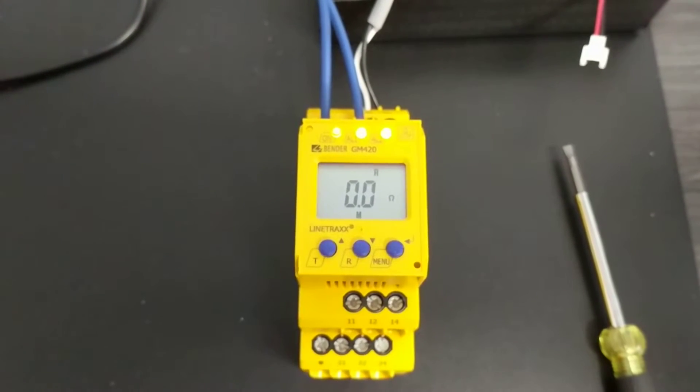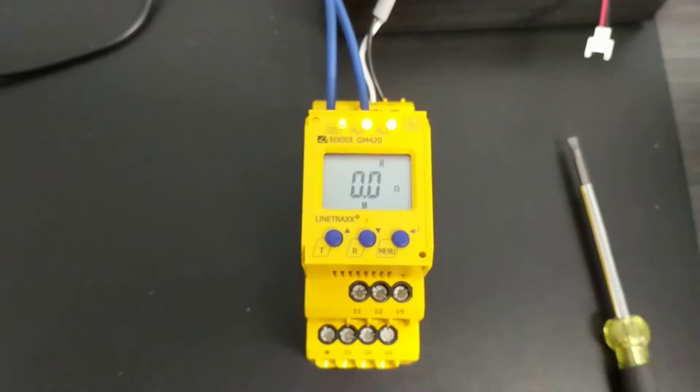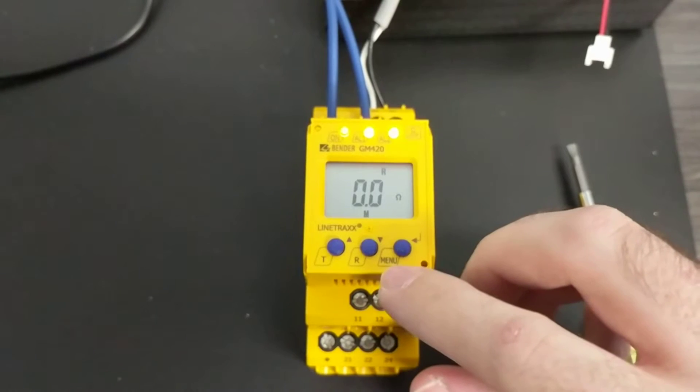This is a quick video showing how to adjust the time on delay for a Bender relay. First off, what you want to do is hit the menu button.